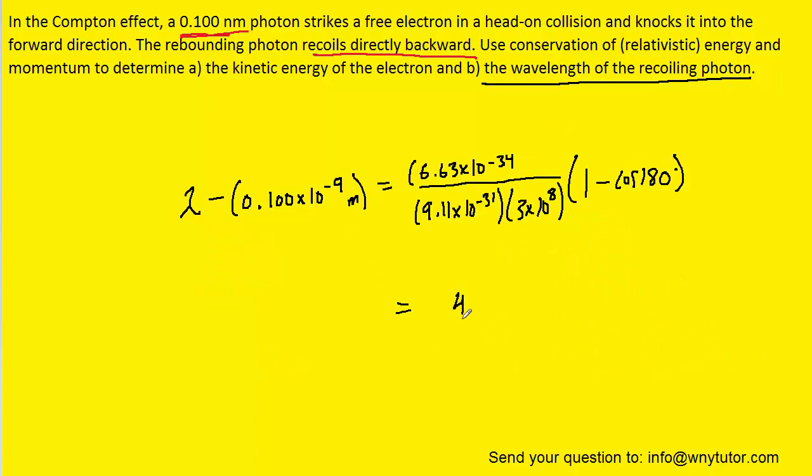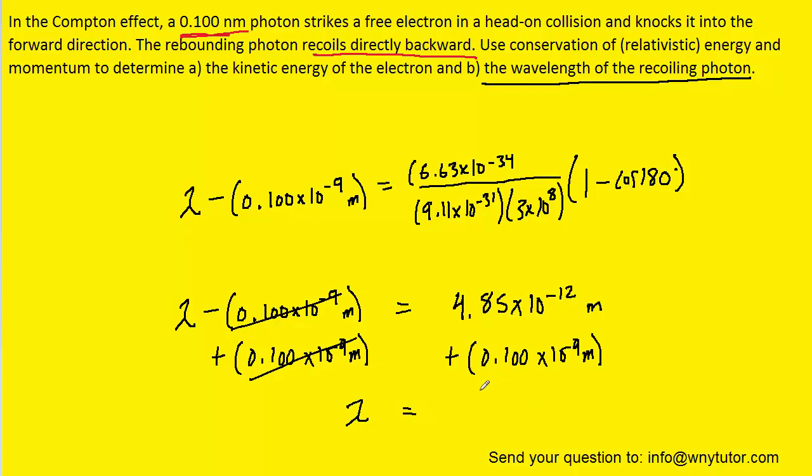Let's pick up our calculators and simplify the right-hand side. And when you punch that into your calculators, you should get about 4.85 times 10 to the minus 12. And that will come out in meters, since everything else was in a standard unit. And then we can go ahead and add the 0.1 times 10 to the minus 9 meters to both sides of the equation. And when you add together, you should get about 1.05 times 10 to the minus 10 meters. And so this would be the correct answer in meters.